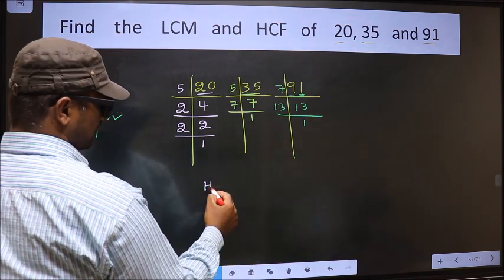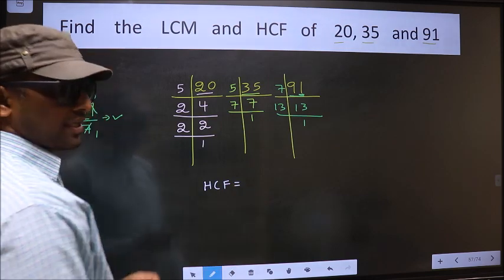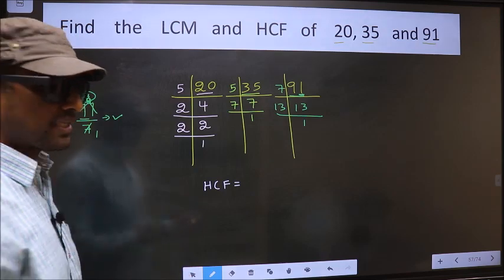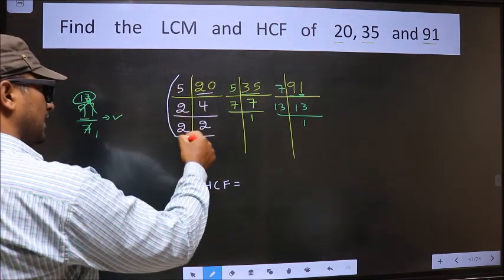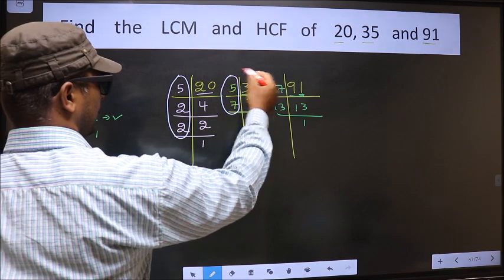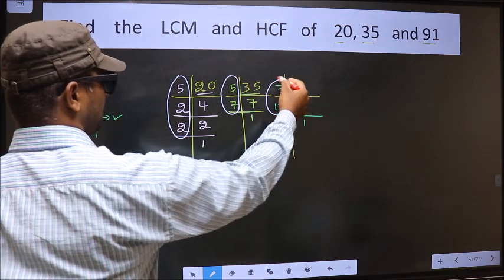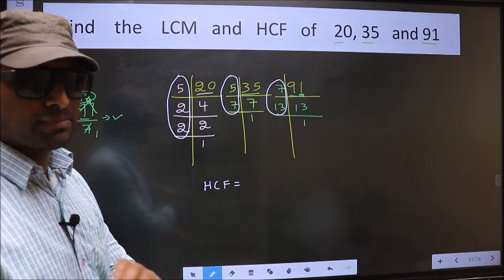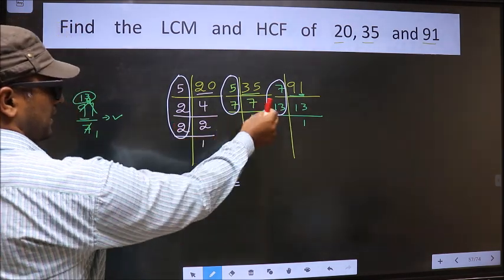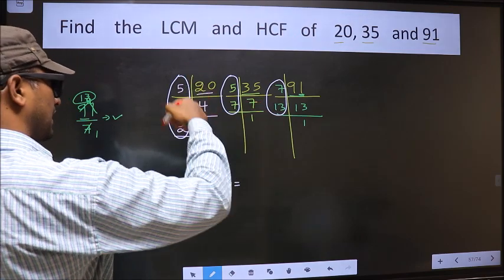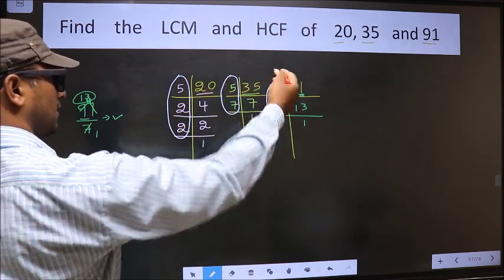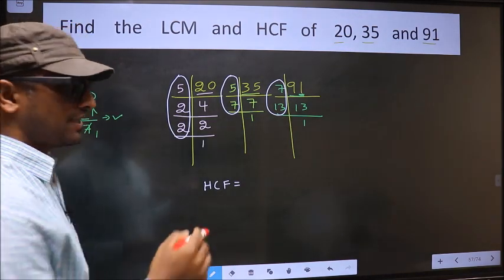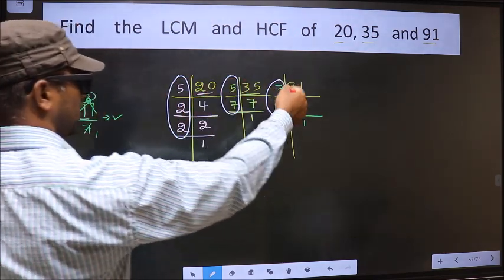Now our HCF is: HCF is the product of numbers which should be present over here and here and also here. I repeat, HCF is the product of numbers which should be present in these 3 places. That is here, here and also here. So now, let us find the numbers which are present here, here and also here.